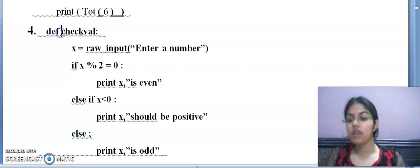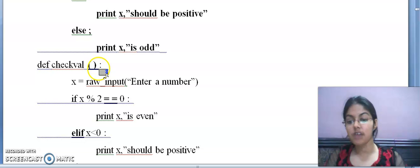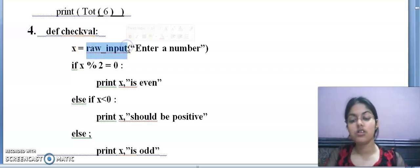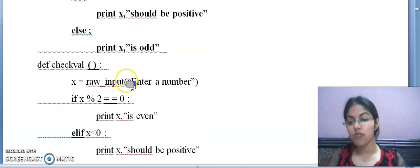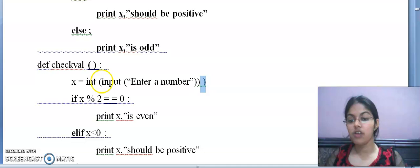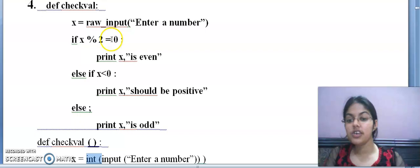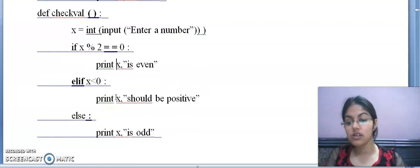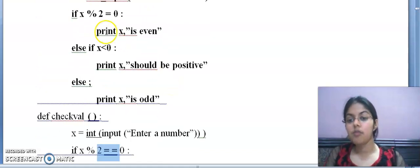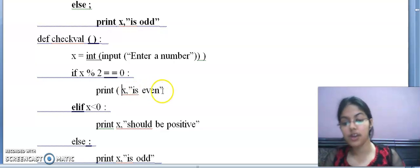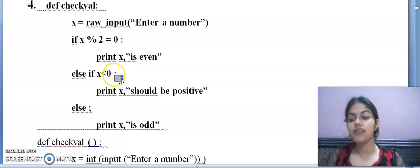Now moving to the next question. Def checkval. Checkval is the name of a function. After the function name, these brackets remain. After that, colon is given, correct. X equals to raw input. This raw input function is used in the older versions of Python. So what will you do here? Since it's a number, you will use int function with input function. And here in the closing part also. You will also underline this.